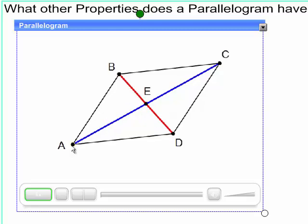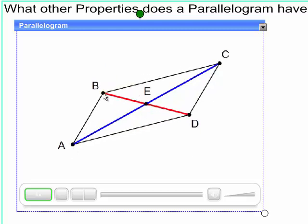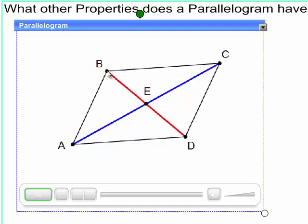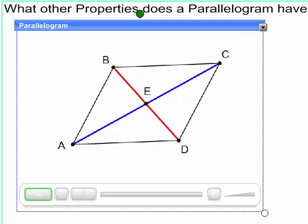So I added the midpoint E, and I colored each diagonal as different colors, so you wouldn't mistakenly think that those diagonals are congruent to each other because they're not necessarily.